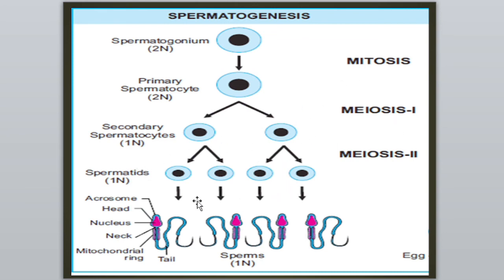Overall meiosis میں چار spermatids بنتے ہیں جو non-motile ہیں۔ ان میں changes occur ہوتی ہیں: nucleus shrink ہوتا ہے اور structures form ہوتے ہیں — acrosome (head)، neck around mitochondrial ring، اور flagella یعنی tail بنتی ہے۔ Acrosome کے اندر head present ہوتا ہے۔ یہ changes occur ہونے پر ایک spermatid complete sperm میں convert ہو جاتا ہے۔ This was all about spermatogenesis۔